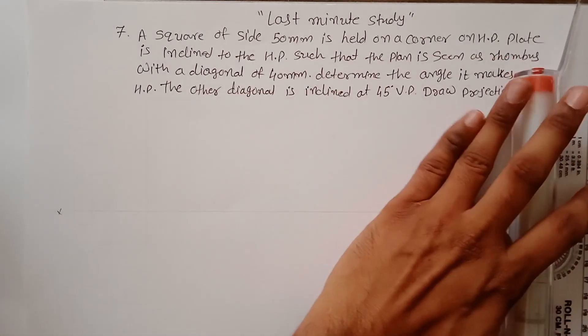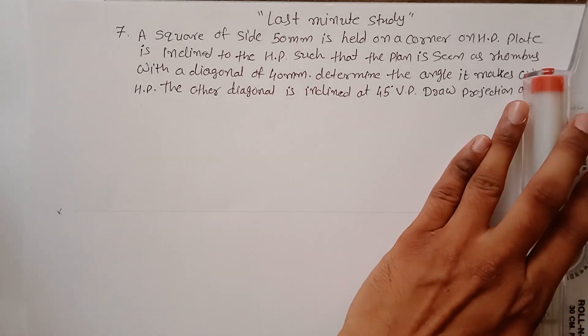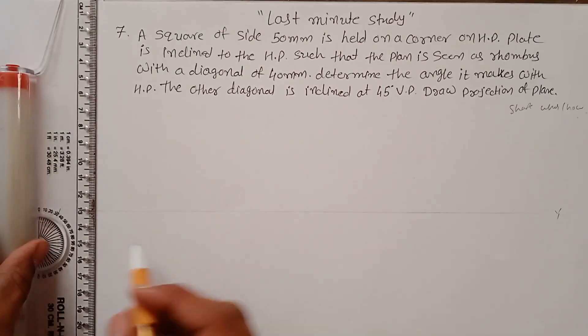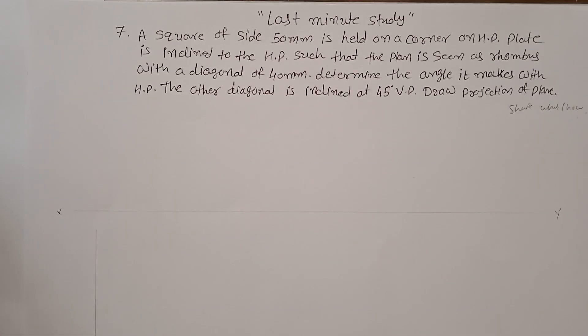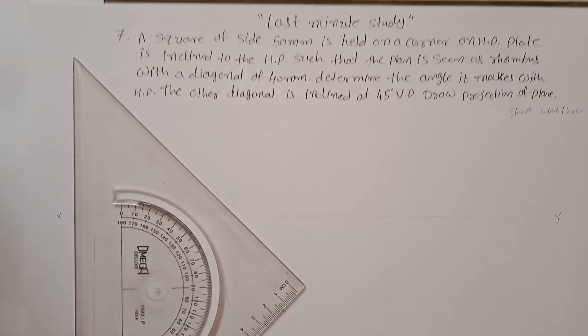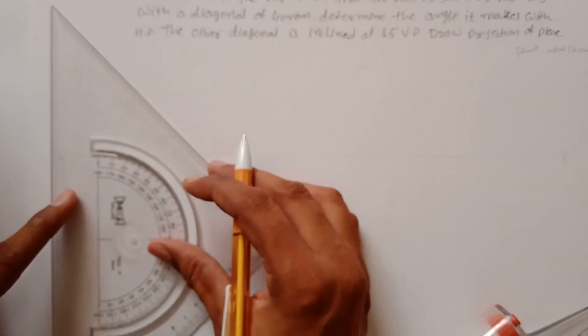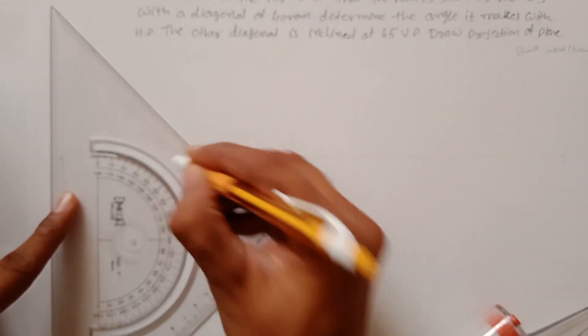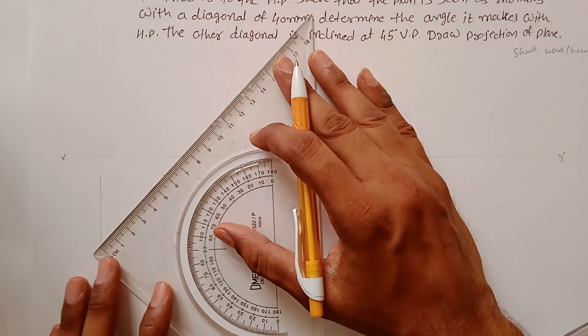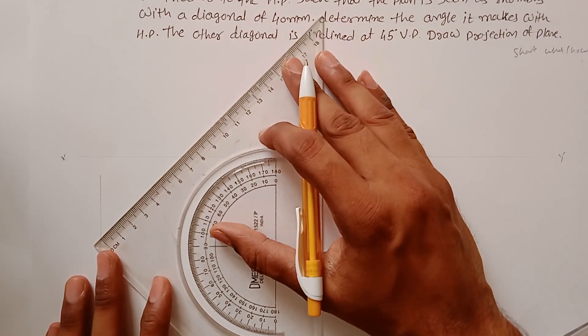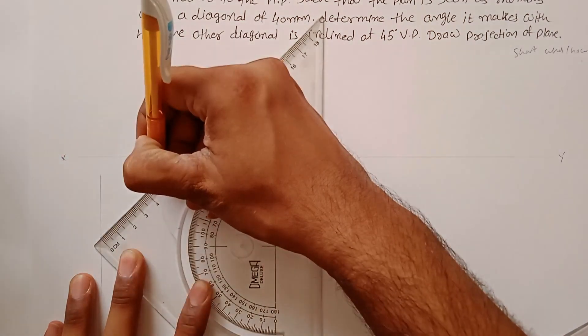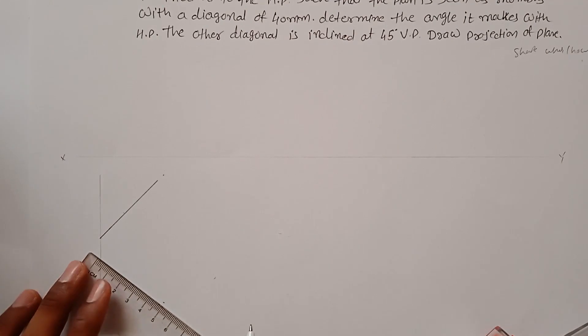To draw the corner, all the lines must be at 45 degrees inclined with the VP. So first draw a vertical line, then draw a line at 45 degrees and measure a distance of 50 mm — that means 5 centimeters — from both the corners.